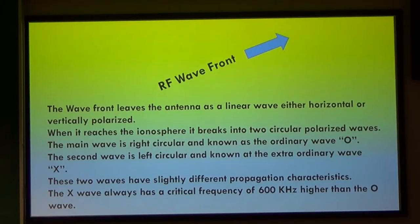Both the ordinary and extraordinary waves skip once they hit the ionosphere. The extraordinary wave lags behind the ordinary wave a little, and the skip characteristics are different — the skip on the extraordinary wave is shorter than the ordinary wave. As I recall, two skips of the ordinary wave are roughly equivalent to three or three-and-a-half skips of the extraordinary wave. It's just a different propagation characteristic.